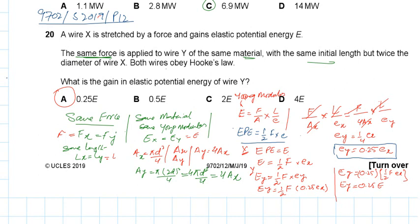Now consider the fact that the Young's modulus of both wires are the same. We know the formula of Young's modulus, which is F over A times L divided by the extension. So F over Ax into L over Ex equals F over Ay into L over Ey.